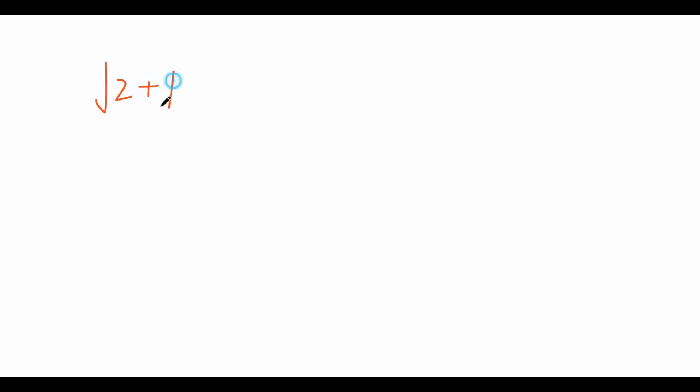Hi guys, it's Daniel here and today I'm going to talk about a really special series of nested roots. A nested root is basically an expression where there's a square root and there are square roots inside it — square roots nested inside other square roots. For example, square root of 2 plus square root of 2 plus square root of 2, where each square root is inside the next.